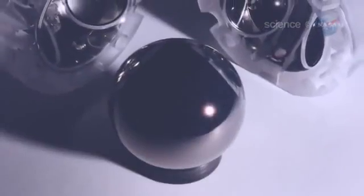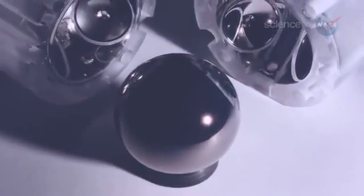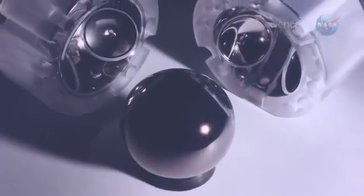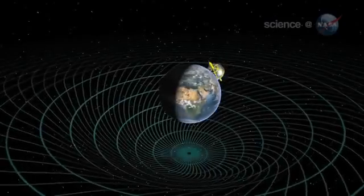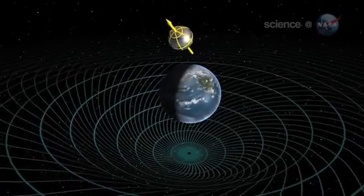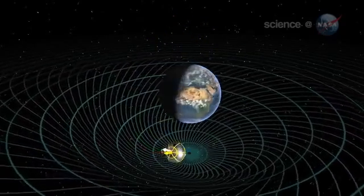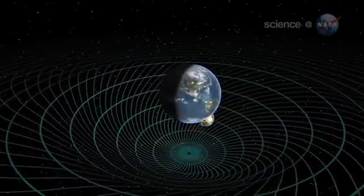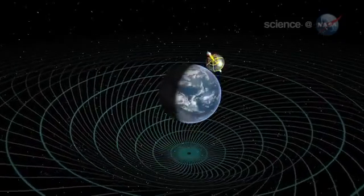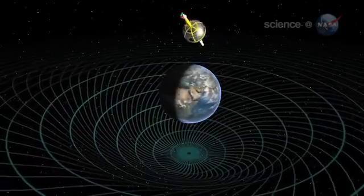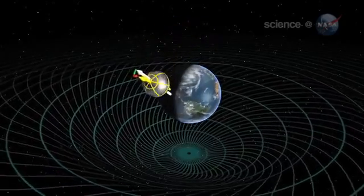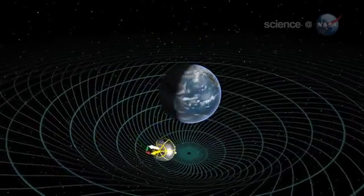Gravity Probe B carried some superspherical gyros into Earth's orbit to see what they would do. In practice, this simple idea is extremely difficult. According to calculations, the twisted spacetime around Earth should cause the axis of the gyros to drift by a tiny amount. Really tiny.